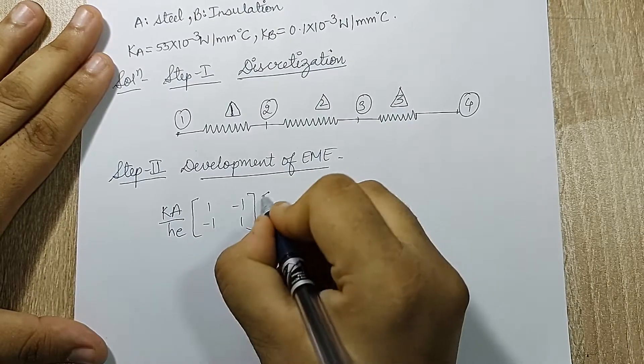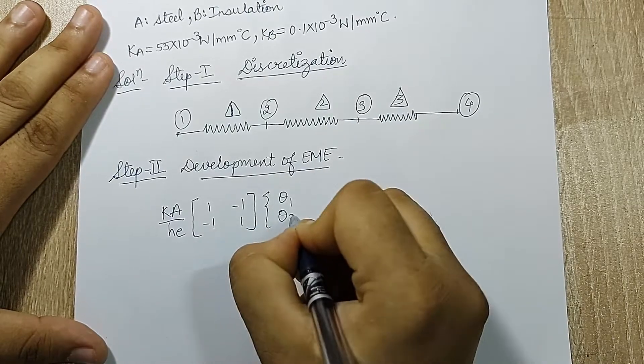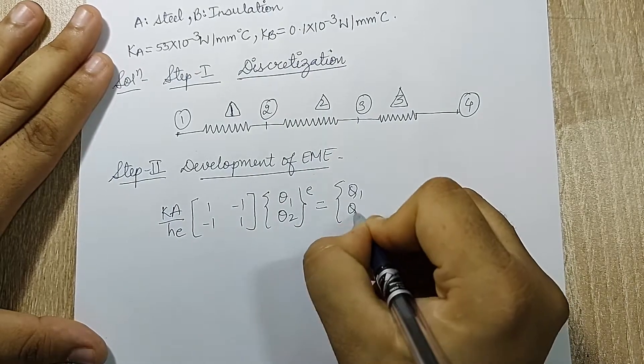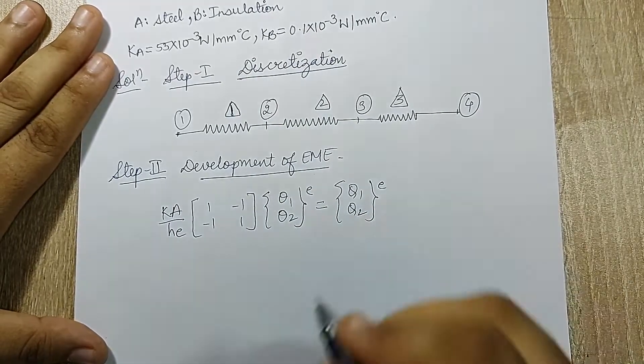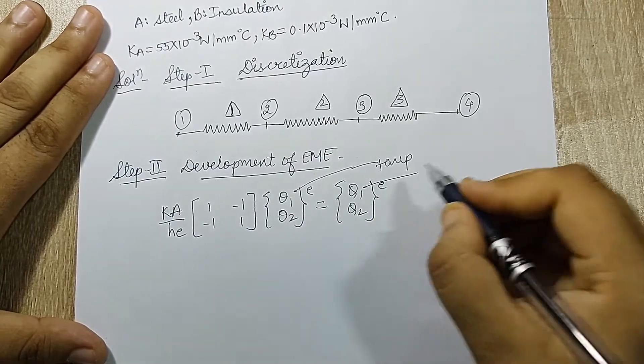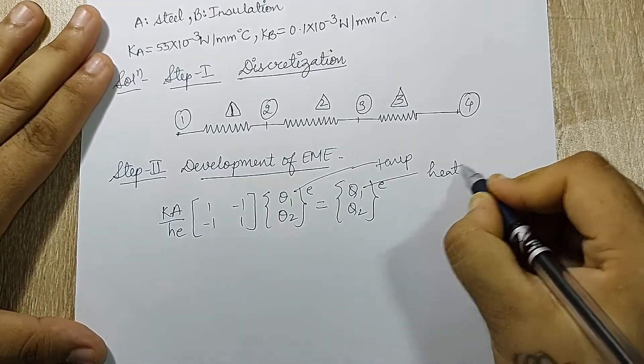Then I'll have {theta_1, theta_2} raise to e is equal to {q_1, q_2} raise to e. Your theta will indicate the temperature and q will indicate the heat flow rate.